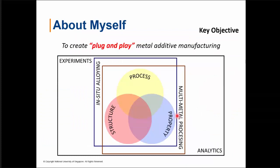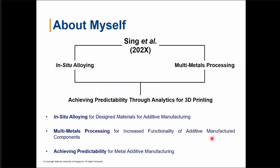This gives a good overview of my research objective in metal additive manufacturing, which is to create a holistic approach through experimental methods and data analytics to further understand the process-property-structure relationship. To push the next frontier in additive manufacturing, I am focusing on two approaches: the in-situ alloying approach and the multi-metal processing approach. Due to time constraints today, I'll be focusing on our work on in-situ alloying.